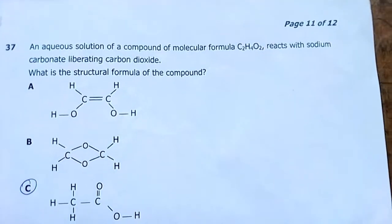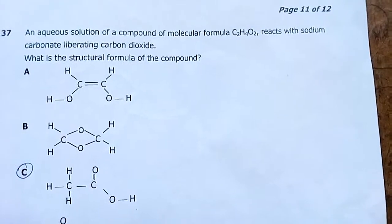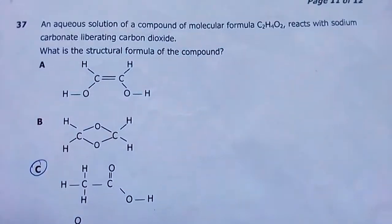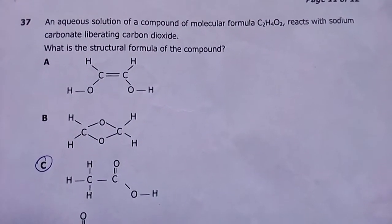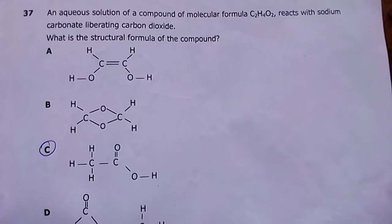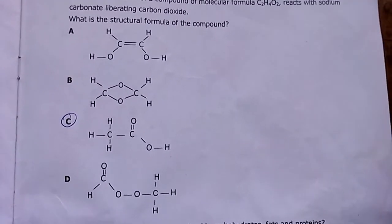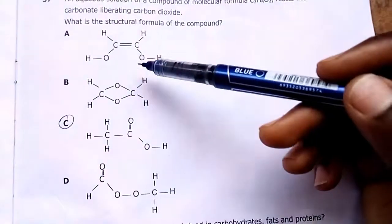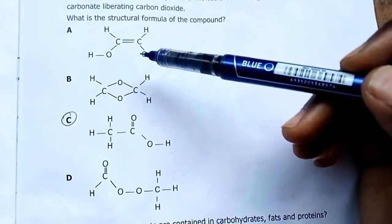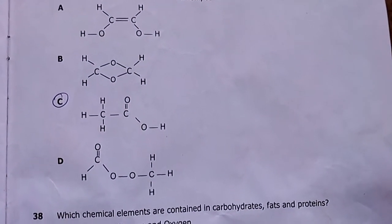Number thirty-seven: an aqueous solution of a compound reacts with sodium carbonate, liberating carbon dioxide. Acids react with carbonates to form a salt, water and carbon dioxide. Looking at the functional groups in the options, my answer is C — ethanoic acid is the most appropriate here.